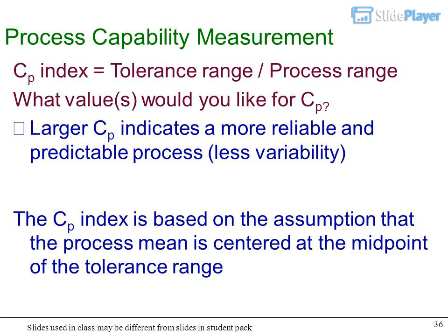Process capability measurement: CP index equals tolerance range divided by process range. What values would you like for CP? Larger CP indicates a more reliable and predictable process with less variability. The CP index is based on the assumption that the process mean is centered at the midpoint of the tolerance range.